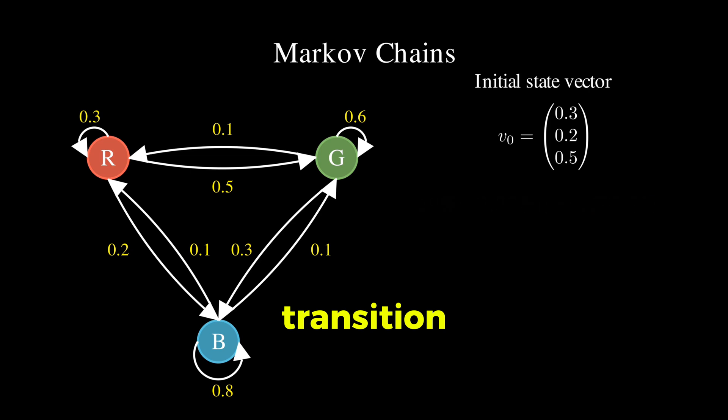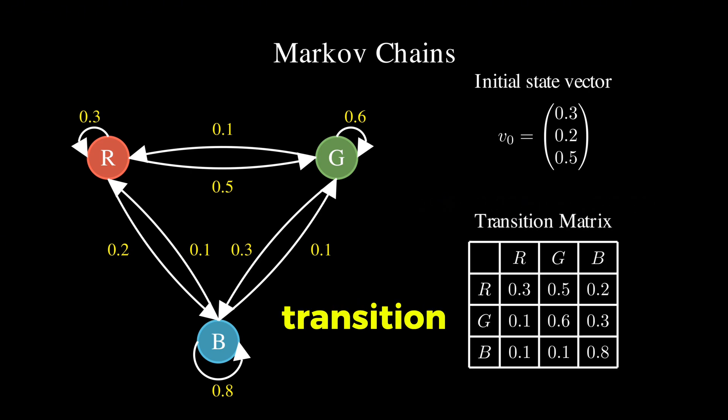And we can put all the transition probabilities between states in a matrix called, you guessed it, the transition matrix.